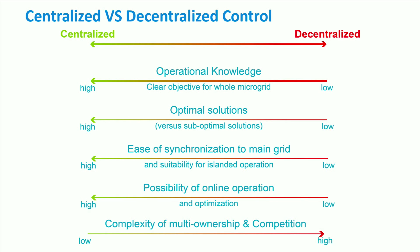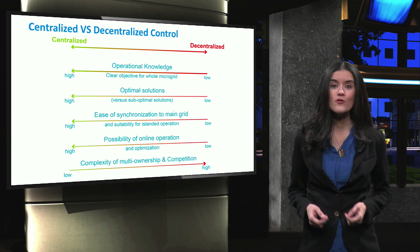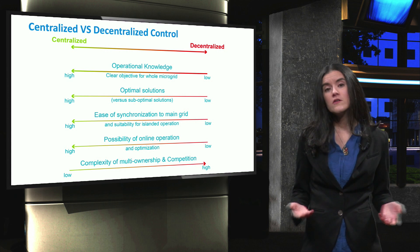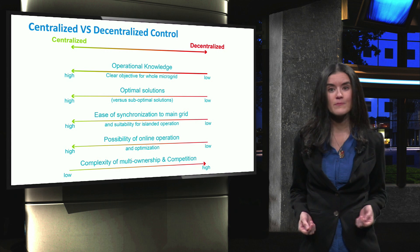Decentralized control schemes have the main disadvantage of being very complex with respect to multi-ownership and competition between various actors or agents. This is due to the fact that each agent seeks to achieve its own objective, such as maximizing its profits.